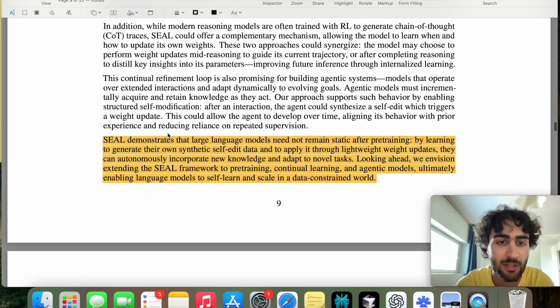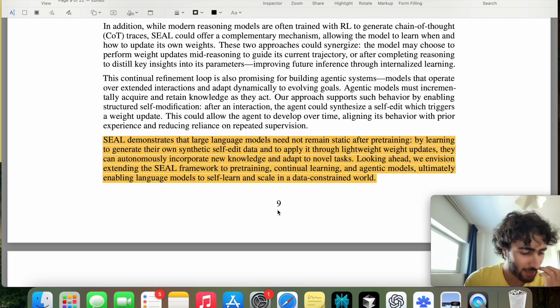In the conclusion, we say SEAL demonstrates that large language models need not remain static after pre-training. By learning to generate their own synthetic self-edit data and to apply it through lightweight weight updates, they can autonomously incorporate new knowledge and adapt to novel tasks. Looking ahead, they envision extending the SEAL framework to pre-training, continual learning, and agentic models, ultimately enabling LLMs to self-learn and scale in a data-constrained world. So I think it's pretty interesting. Essentially what they're saying is that LLMs no longer need to be frozen weights. Once they've been trained, they can essentially learn like humans, and pretty groundbreaking, at least according to me. Let me know what you think in the comments.